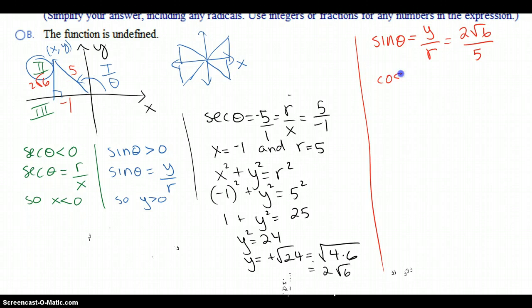Then the cosine of theta is x over r, adjacent over hypotenuse. And the x is negative 1 over r, which is 5.